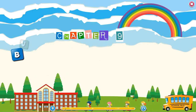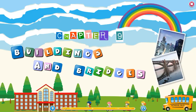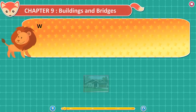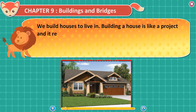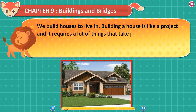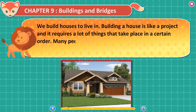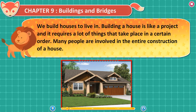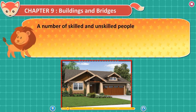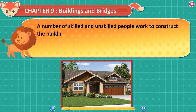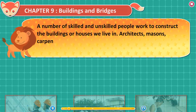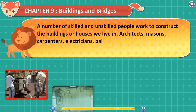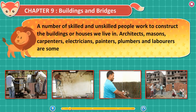Chapter 9: Buildings and Bridges. We build houses to live in. Building a house is like a project and requires many things that take place in a certain order. Many people are involved in the entire construction of a house — a number of skilled and unskilled people work to construct the buildings we live in. Architects, masons, carpenters, electricians, painters, plumbers, and laborers are some of them.